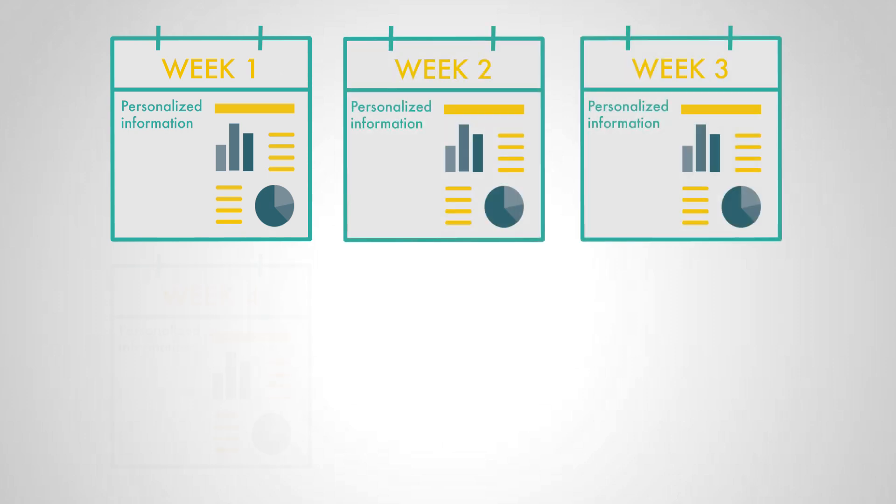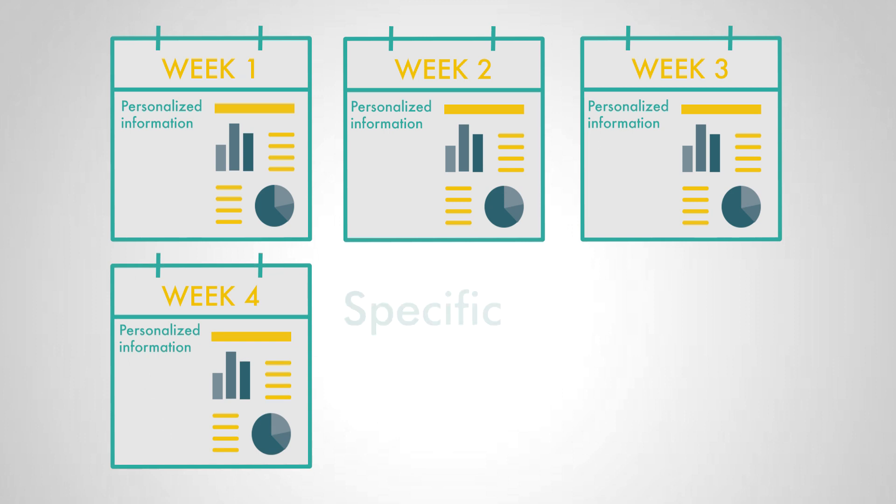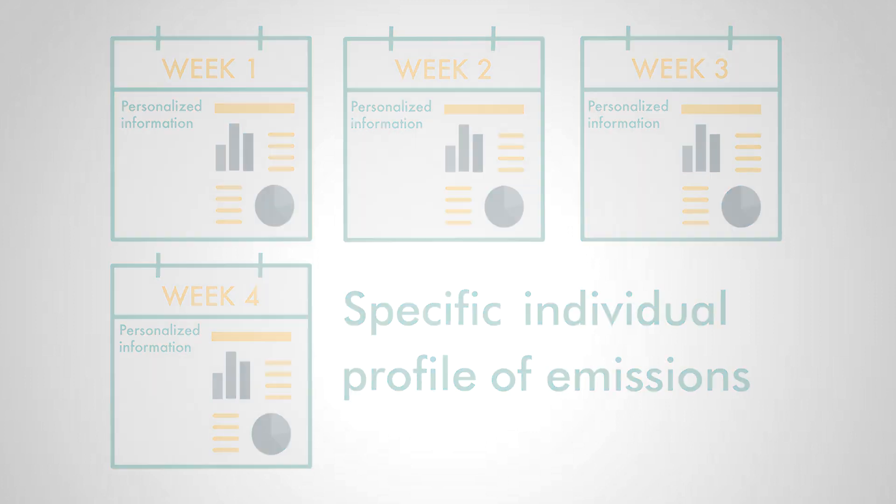Another version of the intervention was the same outlets, the same general information, but in addition, we sent to households a weekly report of their specific individual profile of emissions. So it provided them with precise, personalized information on the link between their behavior and the PM emissions.